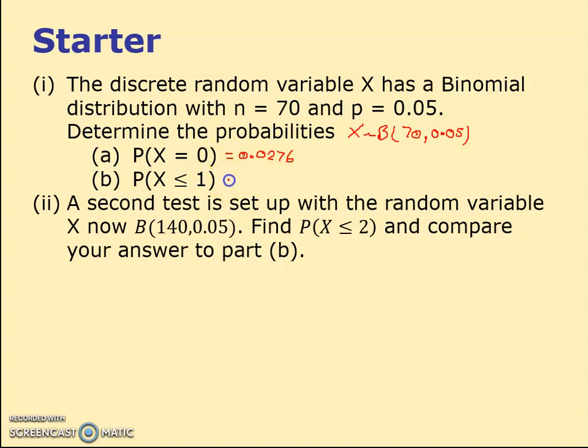The next one uses binomial CDF instead, the cumulative distribution function. Number of times is 70, 0.05, and less than or equal to 1. The great thing about the CD button is it does less than or equals, giving 0.129.